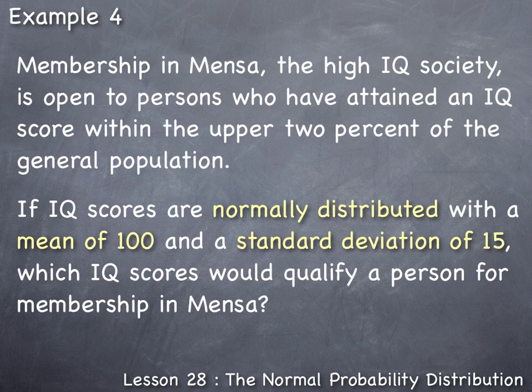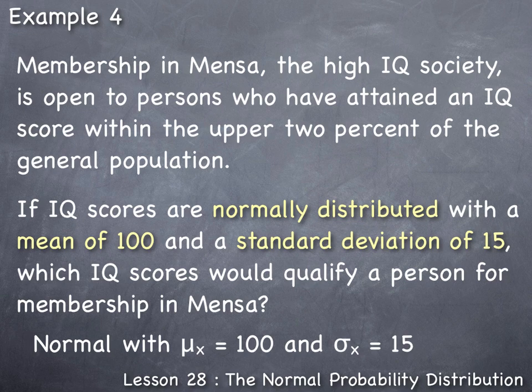This problem follows a normal distribution with μ_x = 100 and σ_x = 15. Now the question is: which IQ scores would qualify a person for membership in Mensa?